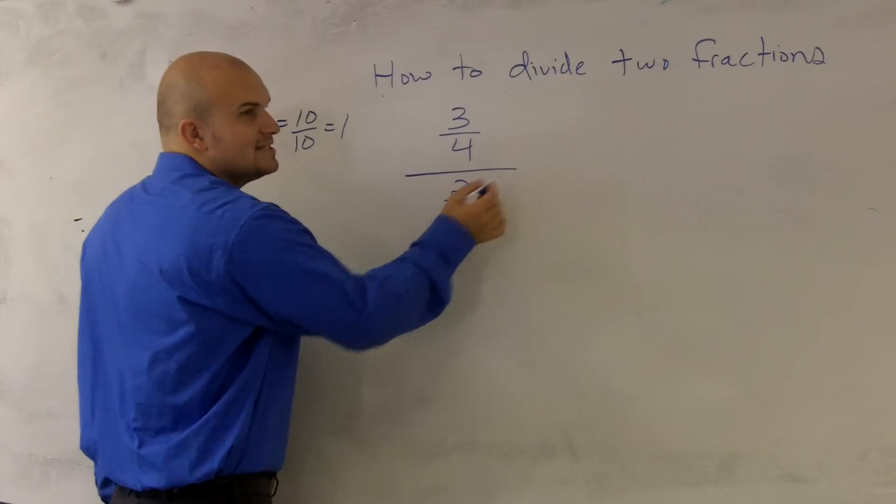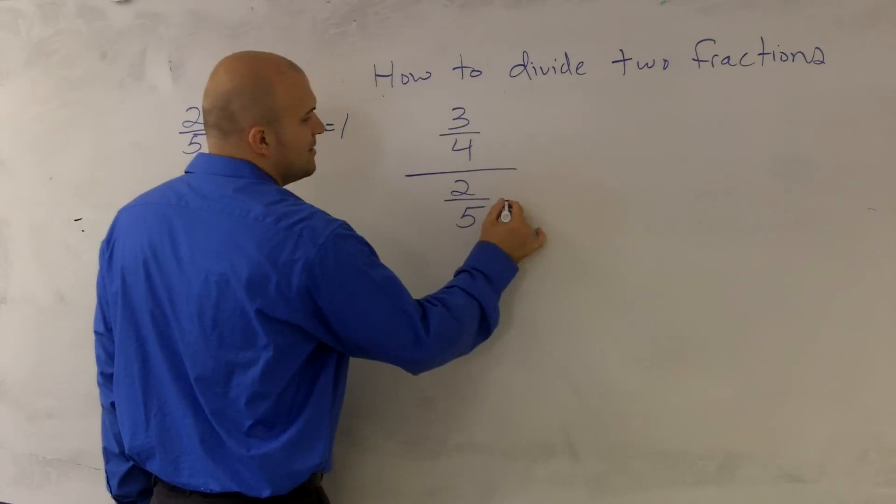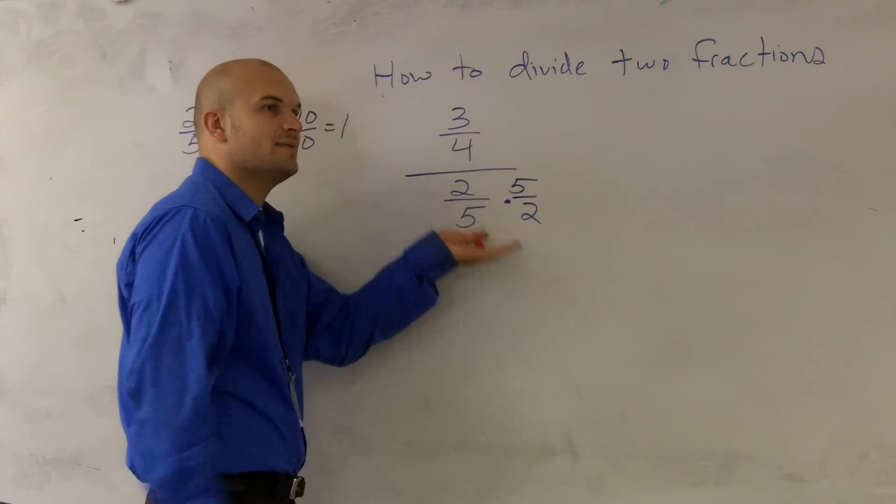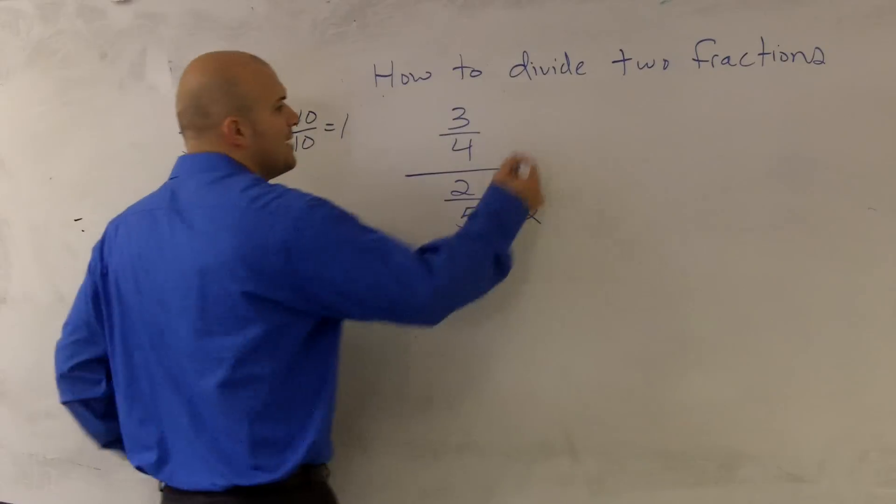So therefore, I want to get this to be 1. So what I'm going to do is I'm going to multiply the bottom by 5 over 2. And remember though, whenever you multiply a fraction, if you multiply the bottom, you have to go ahead and multiply the top by the same number.